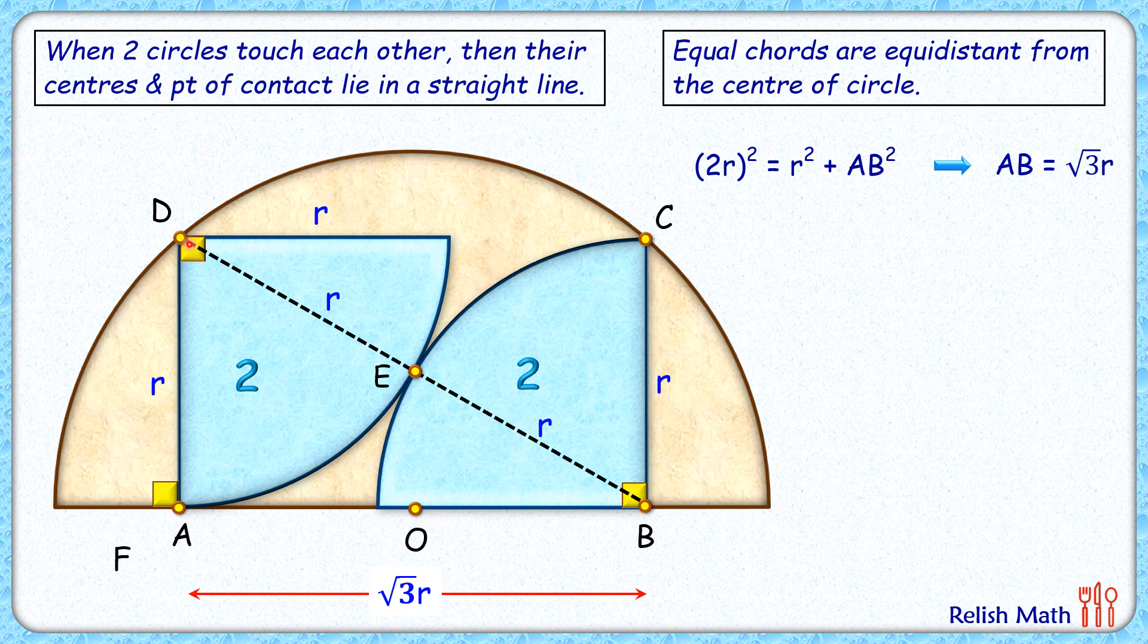Now if you consider DA and CB, these are not chords but with respect to this semicircle you can take them as half chords. That means if you complete the circle, the length of the chord will be 2r for both, and these are half the length, so DA is r and CB is r.